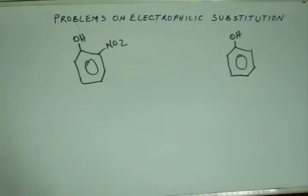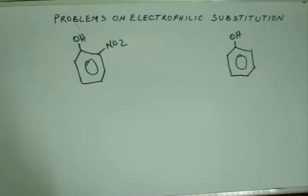Will the major product be Ortho Substituted Nitrophenol or Para Substituted Nitrophenol? The rule of thumb is: the major product is the Para Substituted product, unless you have Hydrogen bonding at Ortho.